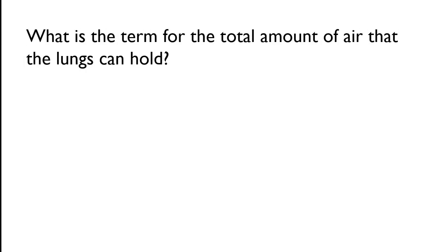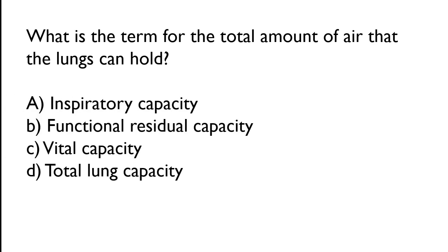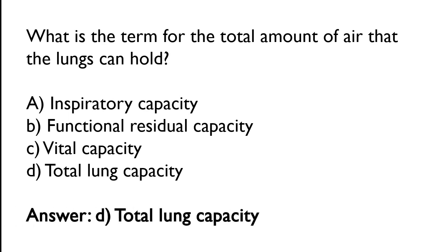What is the term for the total amount of air that the lungs can hold? Options: inspiratory capacity, functional residual capacity, vital capacity, total lung capacity. The correct answer is option D — total lung capacity is the term for the total amount of air that the lungs can hold.